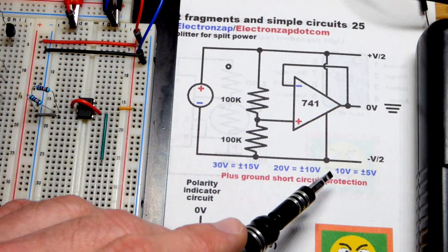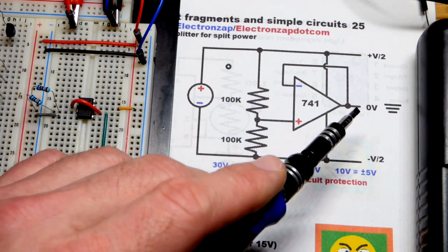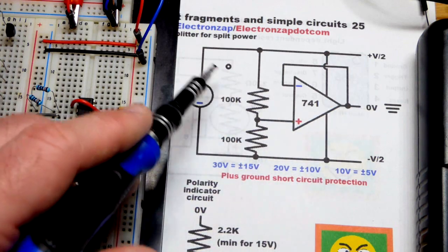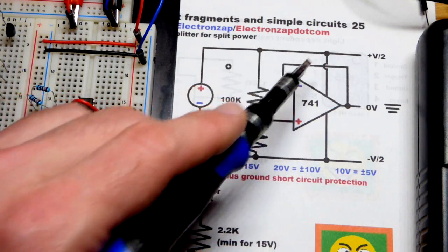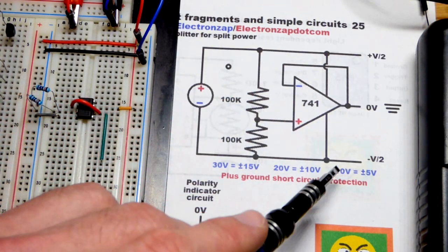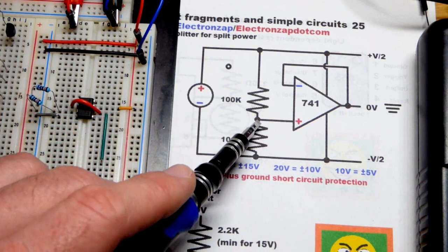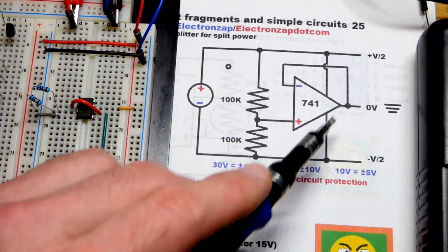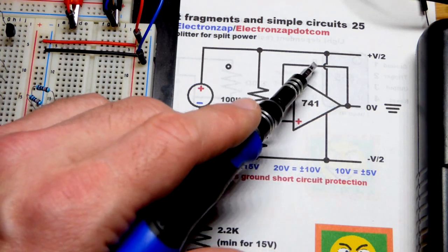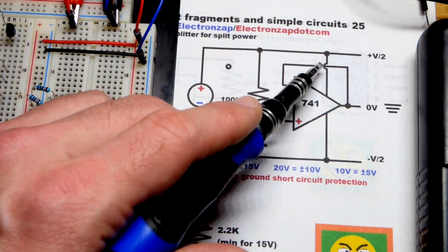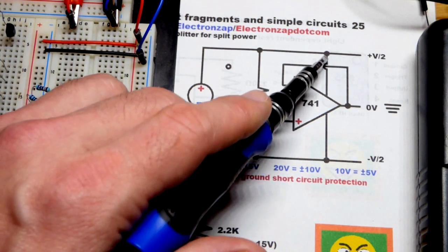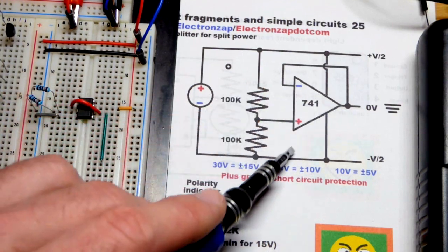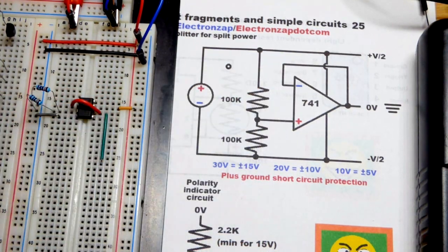Right now I have the power supply set to 10 volts and we split it in relationship to ground. I added little dots here, forgot to delete that. Some people really get annoyed if you don't have dots where there's connections.